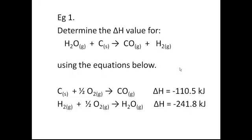We're going to use the two equations given. The first equation is carbon solid plus half a mole of oxygen gas, which will yield carbon monoxide gas, and the delta H for that reaction is negative 110.5 kilojoules. Our second equation is hydrogen gas plus half a mole of oxygen gas, which will yield H₂O gas, and the delta H for that reaction is negative 241.8 kilojoules.